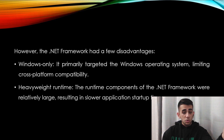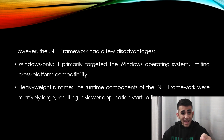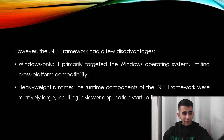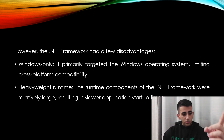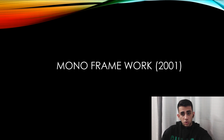Like everything in this world, .NET has some disadvantages too. Back in 2000, .NET was Windows-only — the primary targeted operating system was Windows — with limited cross-platform compatibility. It also had a heavy runtime, which caused slow application startup.